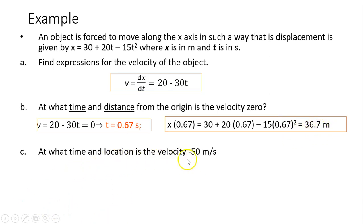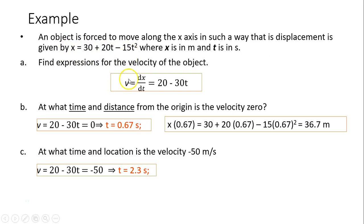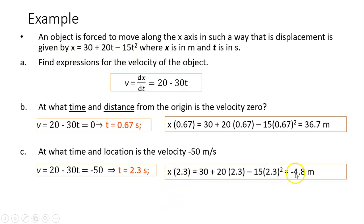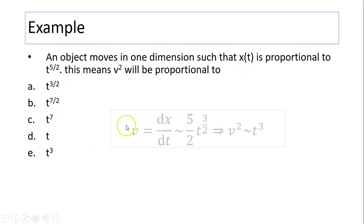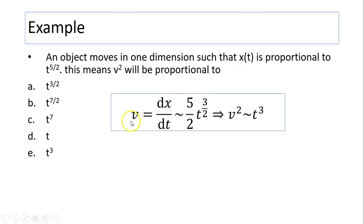Next, find when velocity equals negative 50: set v equals negative 50 and solve for t. Substituting t equals 2.3 seconds into x(t) gives x equals negative 4.8 meters. Final problem: an object moves in one dimension such that x(t) is proportional to t to the power of 5/2. Since v equals dx over dt, v is proportional to t to the 3/2, so v squared is proportional to t cubed. The answer is E.